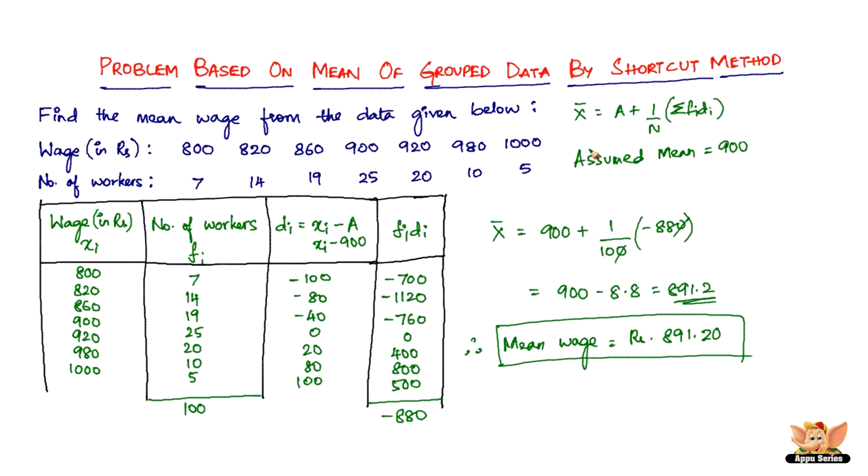Well, so this is the shortcut method and I think it really was a shortcut, because we would have spent a lot of time calculating if it was the direct method. This ends the problem as well as the video. I'll see you in the forthcoming videos with more ways of finding mean of grouped data.